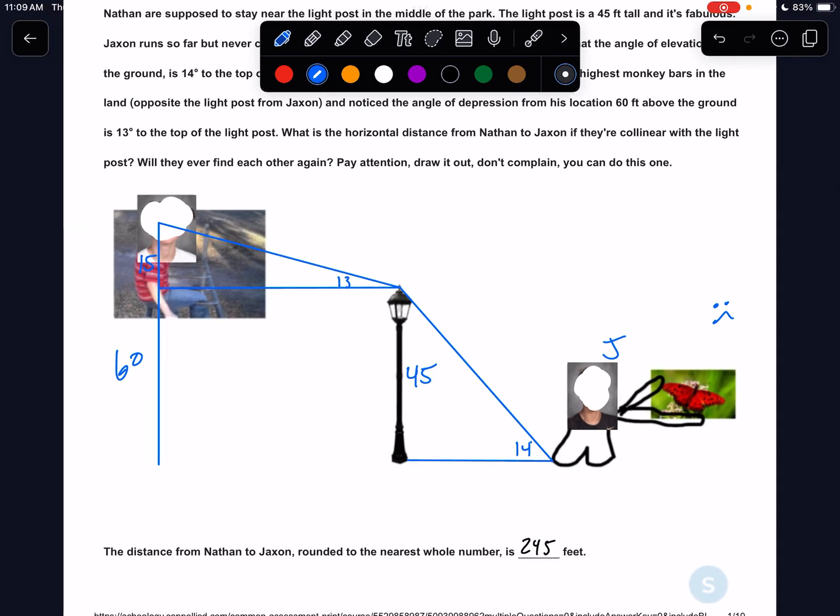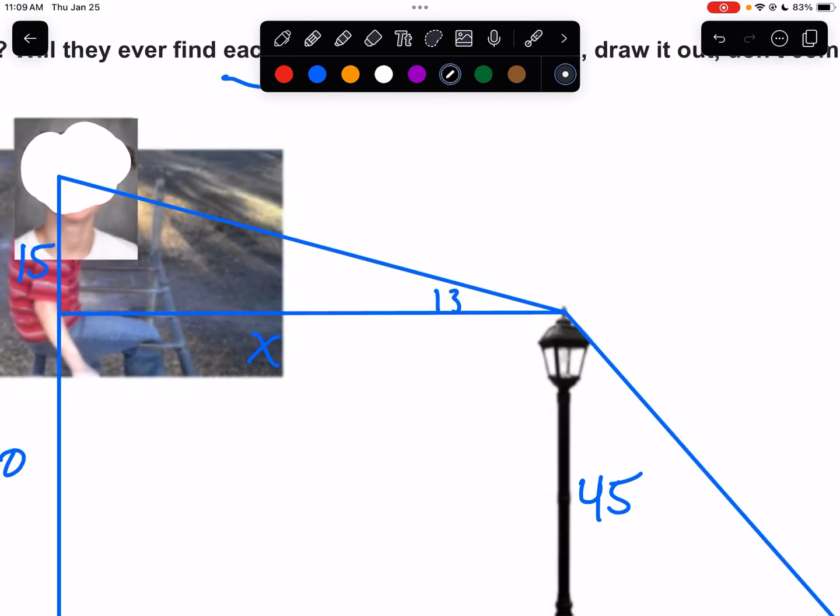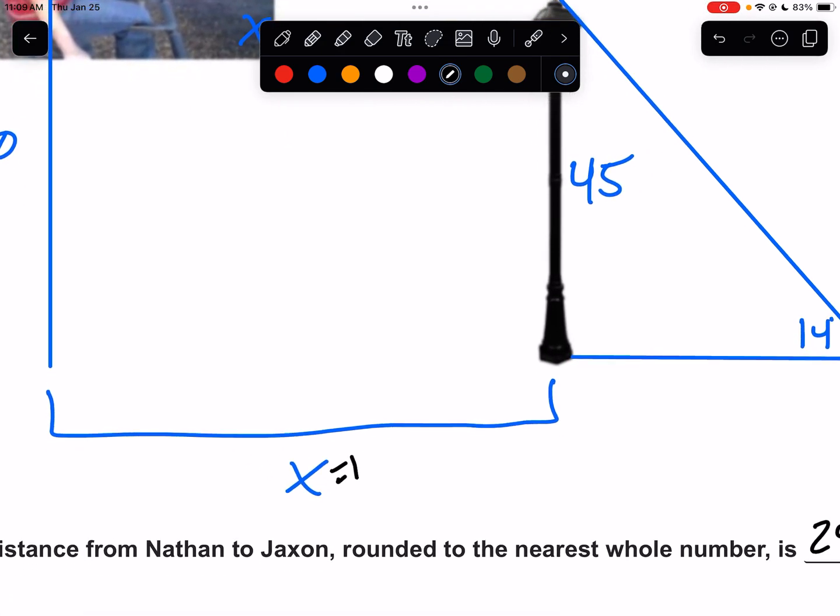What is the horizontal distance from Nathan to Jackson if they are co-linear with the light post? Will they ever find each other again? All right. So this distance here, call it X, we can get. So that would be, if we focus on the right triangle up here by Nathan, I'm going to redraw it. So this is what we're working with. We have a 15, we have a 13-degree angle, and we're looking for that horizontal distance. So that would be the tangent of 13 equals opposite 15 over X adjacent. If X is down low, they switch places. You've got to get tricky with it. And so that would be 15 divided by the tangent of 13. So this distance is 15 divided by the tangent of 13.